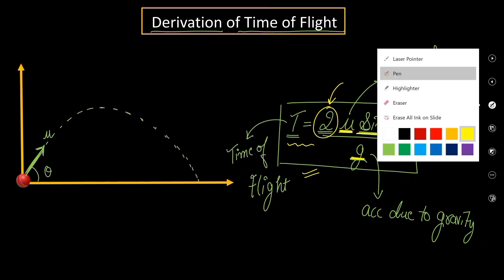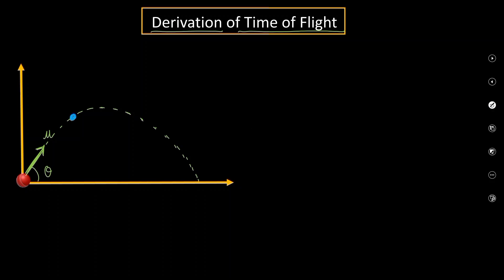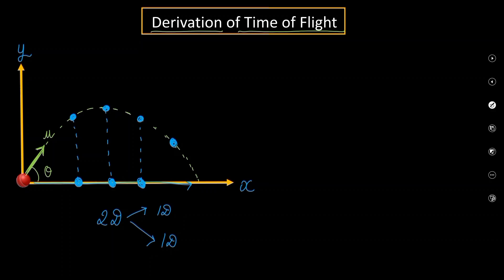Let's analyze the motion of this ball. As the time passes, the ball will keep on moving. Let's say this is the x-axis and this is the y-axis. This ball is undergoing motion in 2 dimensions. It's a little difficult to understand motion in 2 dimensions, so we can split it into two 1-dimensional motions. If you are only able to see the motion of this ball along the x-axis, the ball is only going in a forward, horizontal direction — something like this.